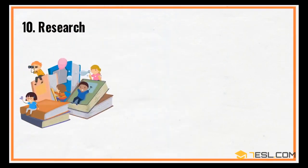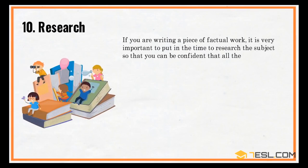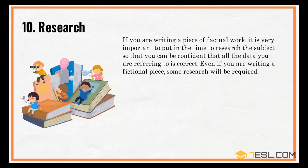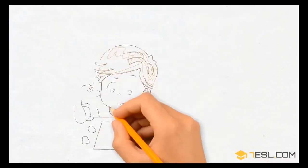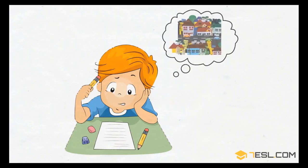10. Research. If you are writing a piece of factual work, it is very important to put in the time to research the subject so that you can be confident that all the data you are referring to is correct. Even if you are writing a fictional piece, some research will be required. For example, if you are writing about a fictional character that lives in a city you have never visited, in order to make the story believable, you should research that city.